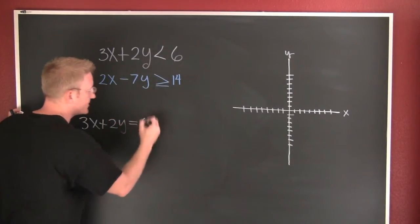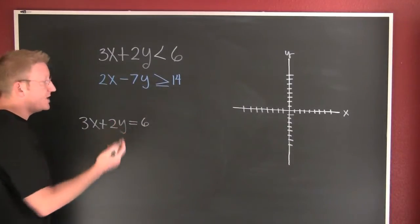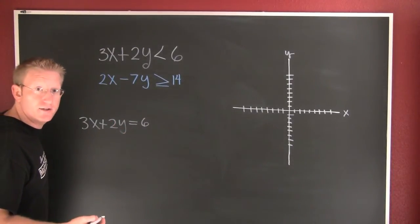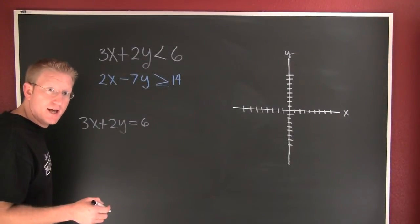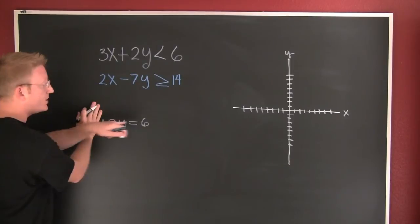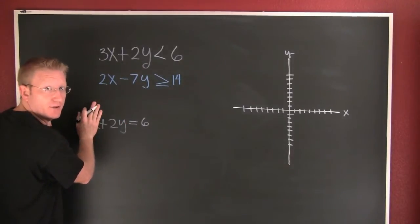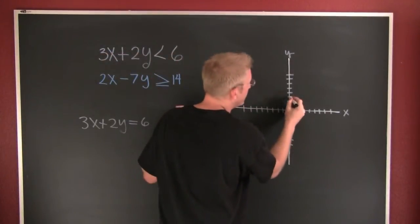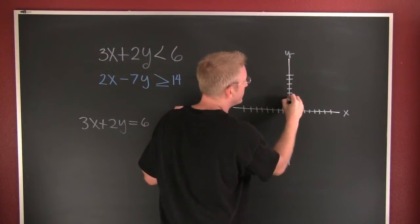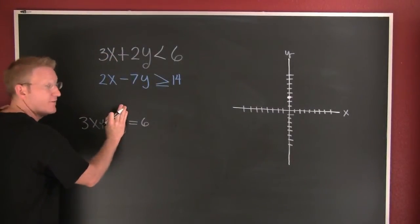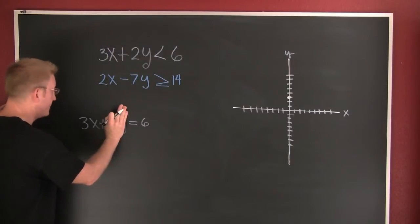So maybe over on the side you could have 3x plus 2y is equal to 6. I'm graphing the white one. This thing appears that it's going to lend itself to x and y intercepts. A nice way to graph using x and y intercepts is let x be zero, and what's y? When we divide by 2 we see y gonna be 3, so I can go and I can put a dot right here that y is equal to 3.